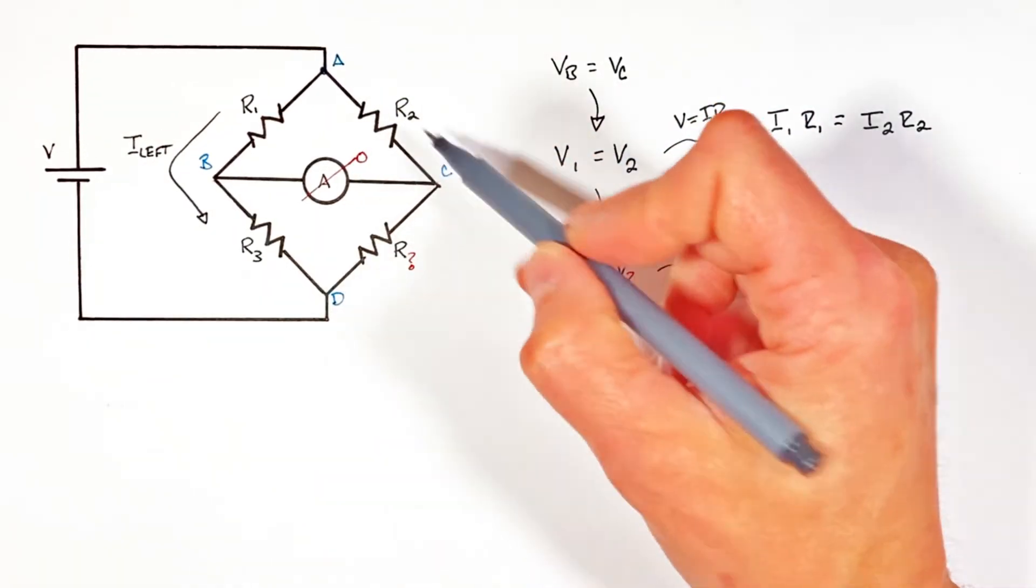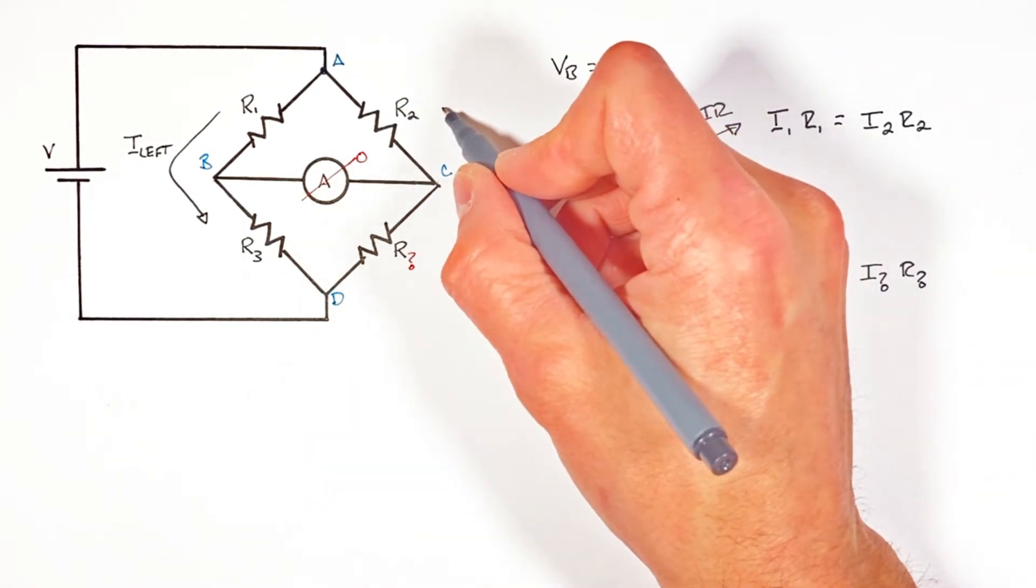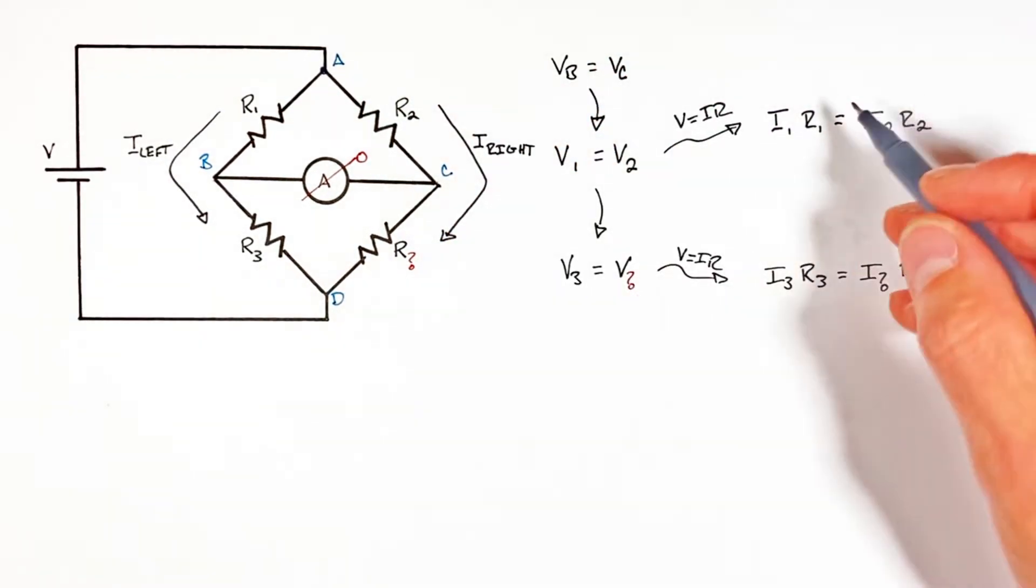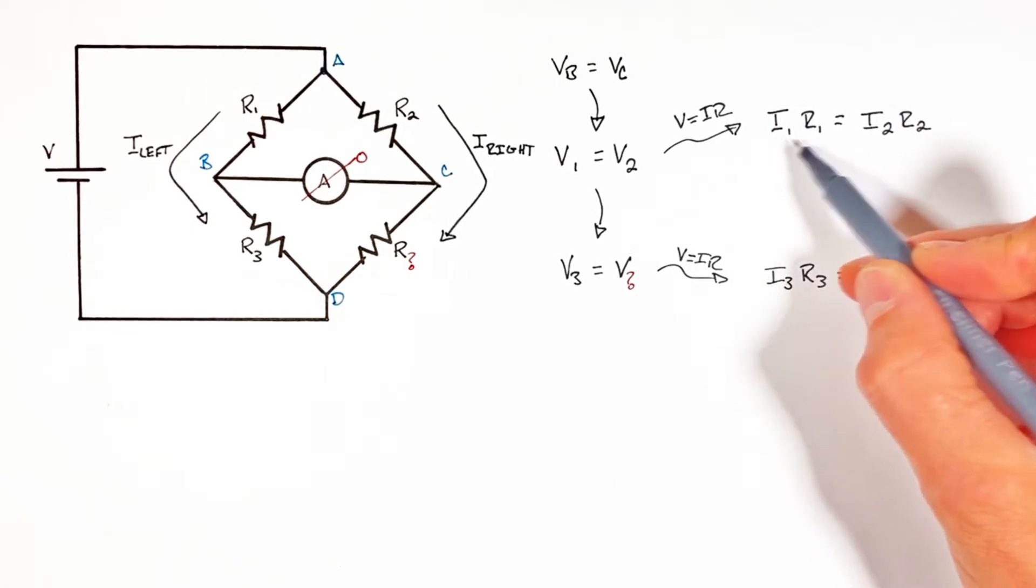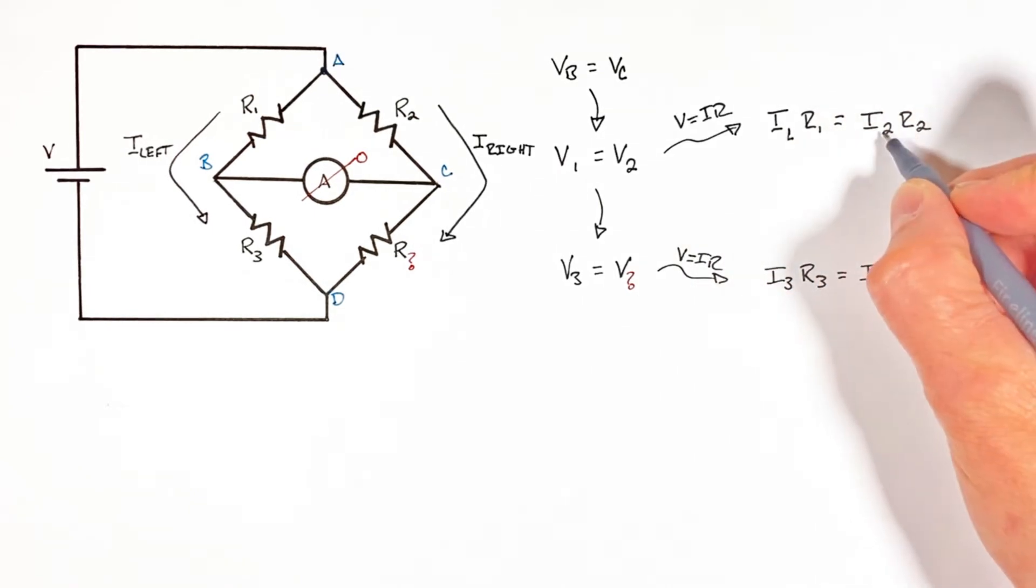And the similar logic is applied to the right. There's going to be the same current through R2 as there is through our unknown resistor. So rather than referring to these currents as I1, I2, I3, and our unknown, we're simply going to call them the current through the left and the current through the right.